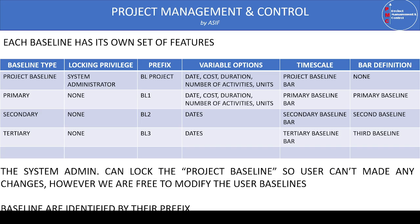All four types of baselines can be shown on the timeline. In the Define Bar dialog box, you can find bars for the project baseline, primary baseline, secondary baseline, and tertiary baseline. The bar definitions for primary, secondary, and tertiary baselines are already defined in P6 by default. However, for the project baseline, you need to define it yourself — the name appears in the list of bars, but the bar itself needs to be added manually.